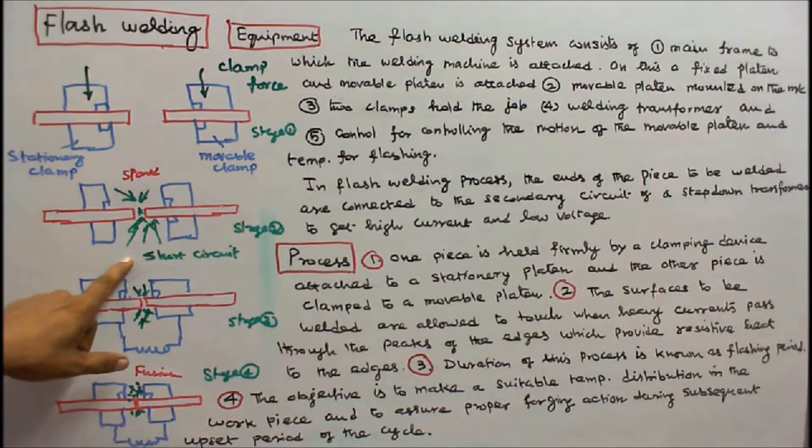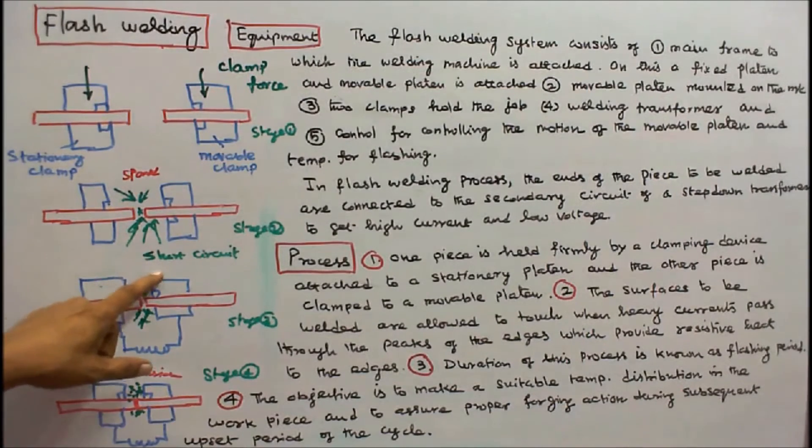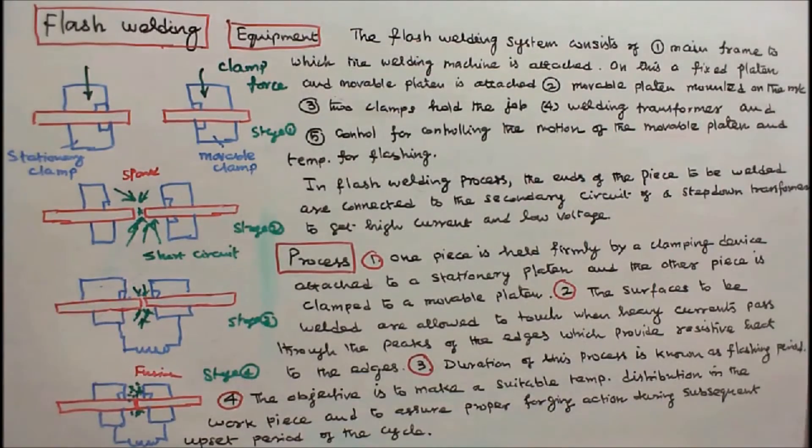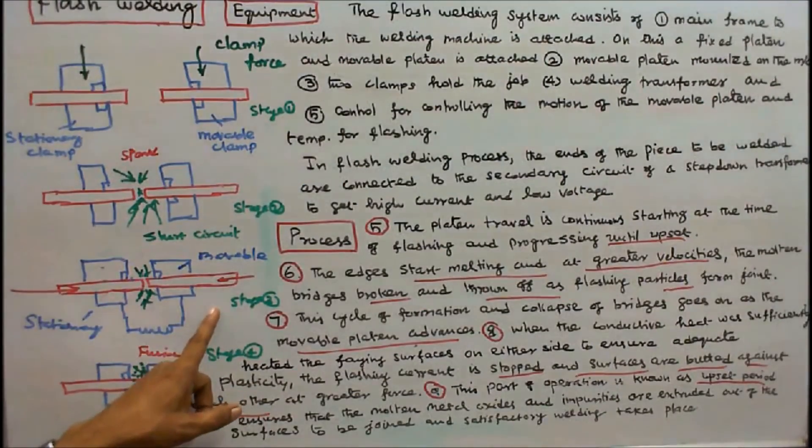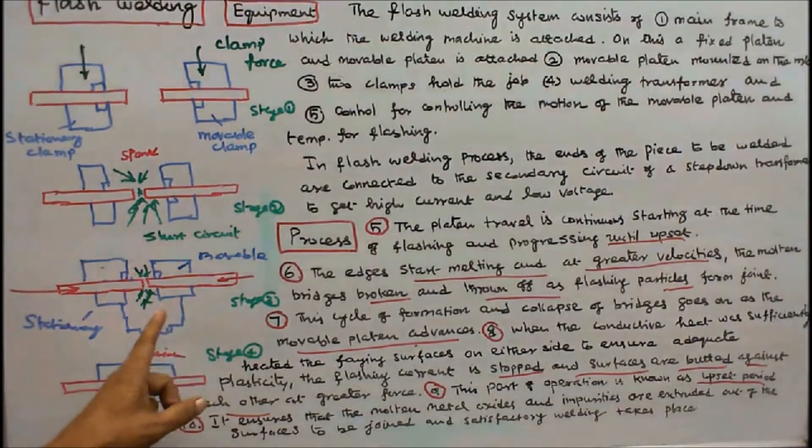3. The objective is to make a suitable temperature distribution in the workpiece and to assure proper forging action during subsequent upset period of the cycle. 4. The platen travel is continuous starting at the time of flashing and progressing until upset.